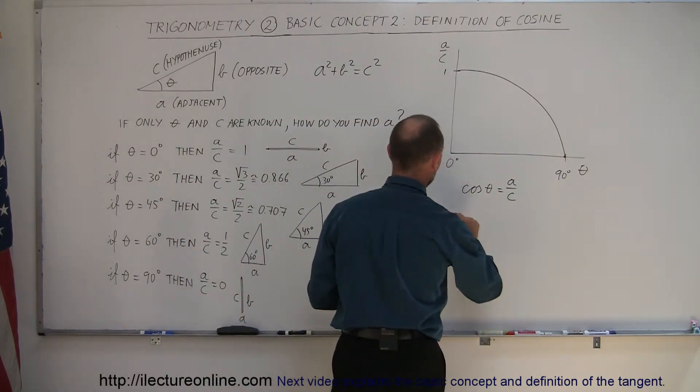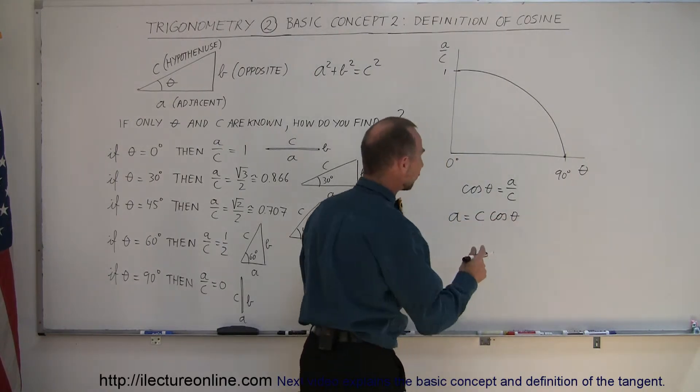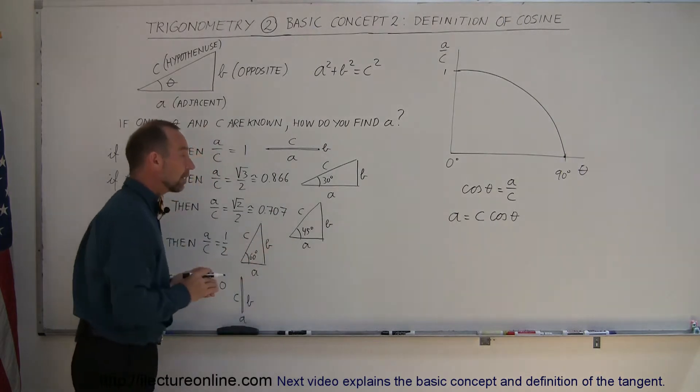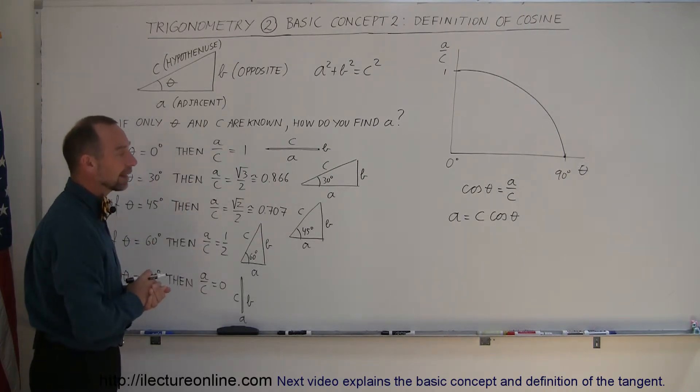And if I now want to find the value for a, I can then solve this equation for a, so a is equal to the length of the hypotenuse times the cosine of theta. And all I have to do is find the angle, then take the cosine of that angle, multiply times the length of c, and I know what the side a is equal to.